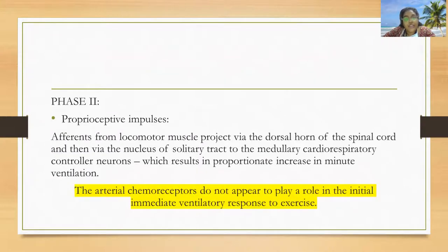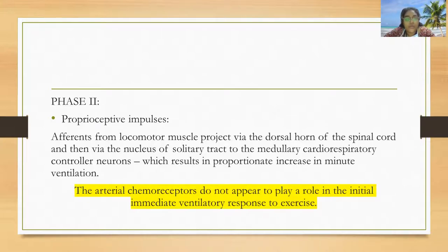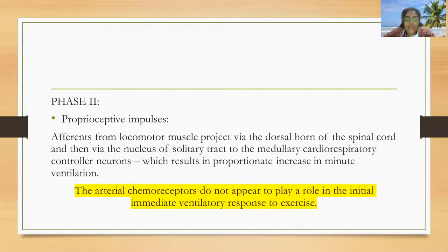In phase 2, we have mostly proprioceptive impulses. The efference from the locomotor muscles projects via the dorsal horn of the spinal cord, then via the nucleus of the solitary tract to the medullary respiratory control neurons, which results in a proportionate increase in minute ventilation. There is no involvement of the arterial chemoreceptors in the immediate ventilatory response to exercise.